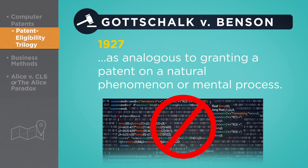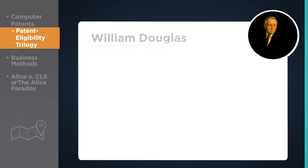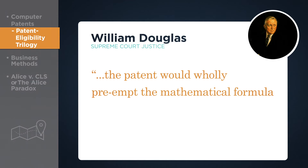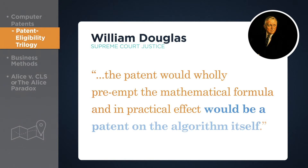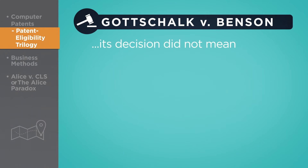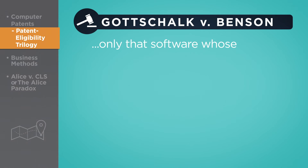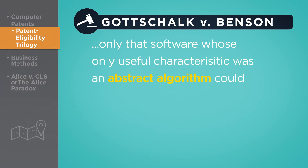Delivering the court's opinion, Justice William Douglas explained that the patent would wholly preempt the mathematical formula and, in practical effect, would be a patent on the algorithm itself. The court made a point of saying, however, that its decision did not mean that computer software could not be patented — only that software whose only useful characteristic was an abstract algorithm could not be patented.